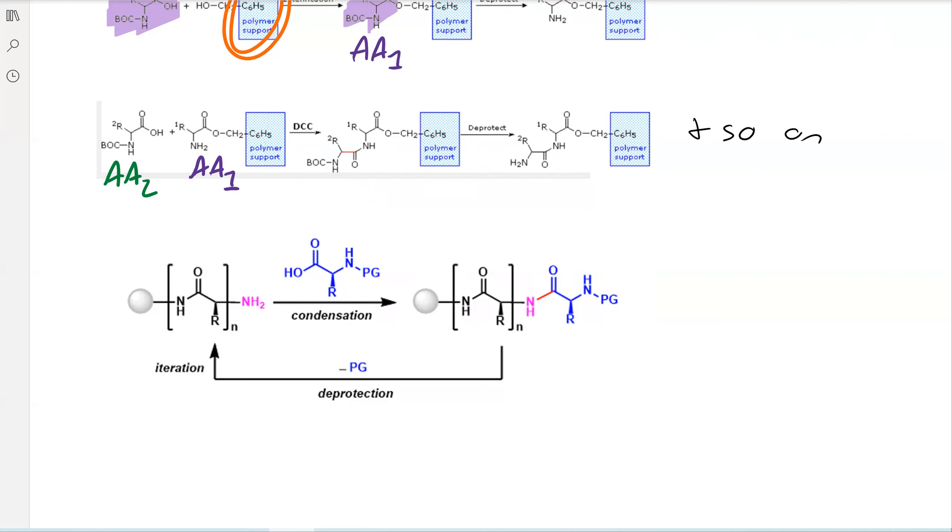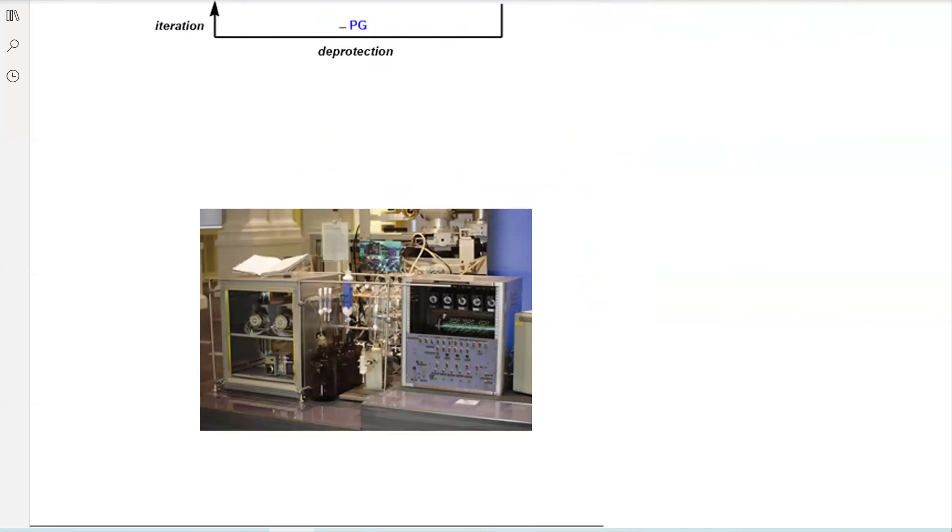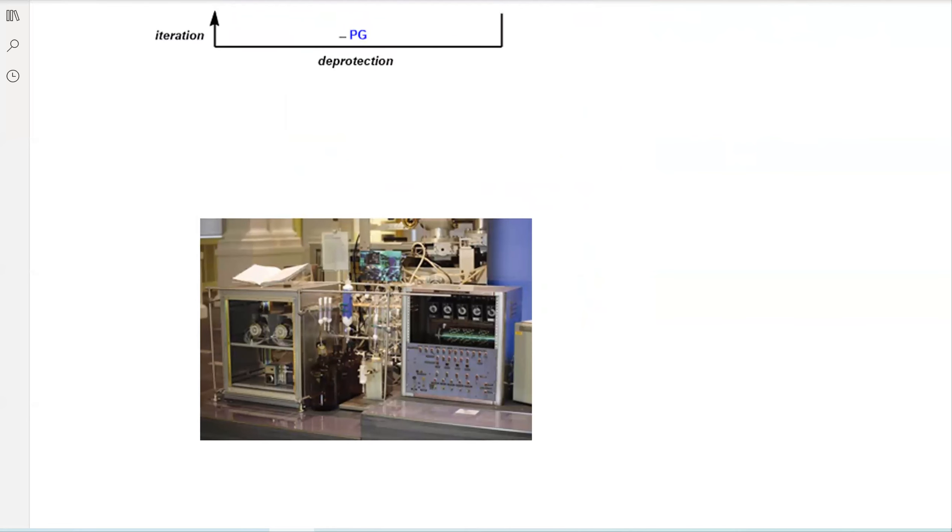However, due to the fact that we're using this insoluble polymer, it's relatively easy to do, and so easy that we can actually automate it. This whole process can be done by instrumentation. We don't have to pay a chemist to sit there and do this reaction again and again. These are called peptide synthesizers.